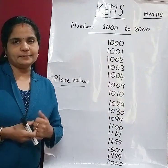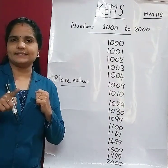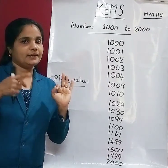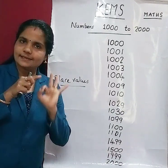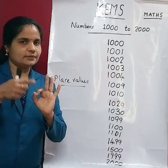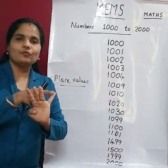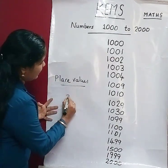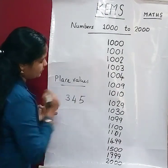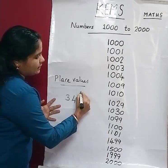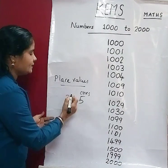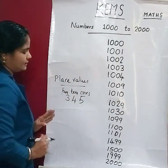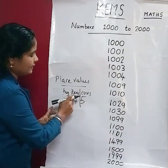Next, the place values of these numbers. We learned the place values in the last classes. In 3-digit numbers: 1s, 10s, 100s. For example, take the number 345 — 5 is the 1s place, 4 is the 10s place, and 3 is the hundreds place.